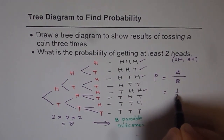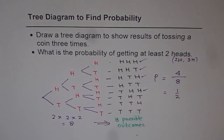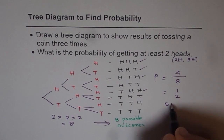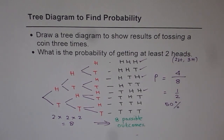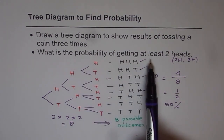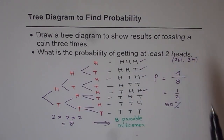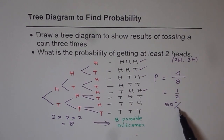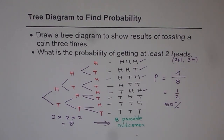None of the remaining tail-first combinations work. So out of eight possible combinations, four have at least two heads. Therefore, the probability is equal to 4 out of 8, which is one half, or 50%. You could write probability as 1/2 or as 50% — either one is the right answer. The probability of getting at least two heads is 1/2 or 50%.